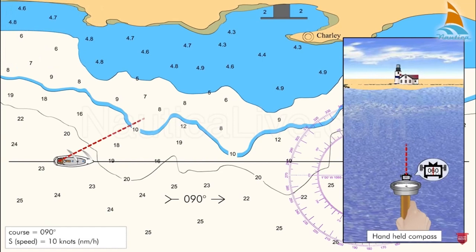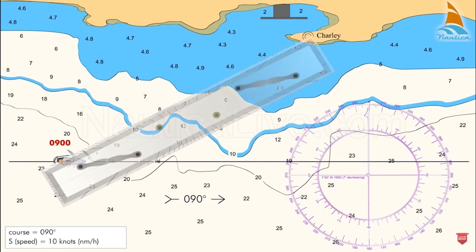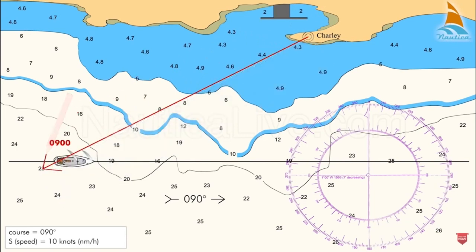We will take the first bearing from the Charlie tower with a bearing of 60 degrees. We convert that into the angle from our course line: 90 minus 60 equals 30 degrees. That is the Charlie tower bearing at 0900, and we transfer the first bearing of 30 degrees from our position on our course line.